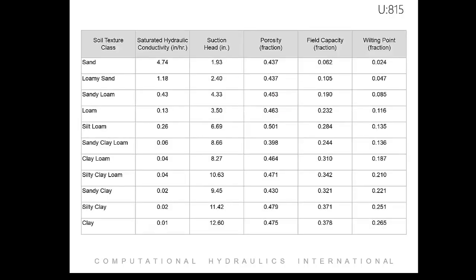For tables that outline typical hydrology and hydraulic parameter values, you can turn to page 815 in your SWMM 5 User's Guide. On this slide, you can see a table listing the Green-Ampt parameters for different soil values.